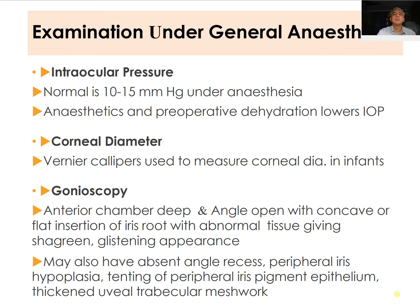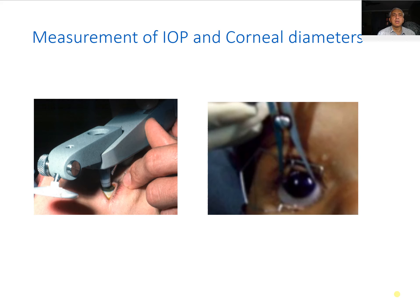On gonioscopy, the anterior chamber is deep and the angle is open with a concave or flat insertion of the iris root. Abnormal tissue gives rise to a shagreen or glistening appearance in the angle. Findings may also include absent angle recess, peripheral iris hypoplasia, tenting of the peripheral iris pigment epithelium, and a thickened uveal trabecular meshwork.